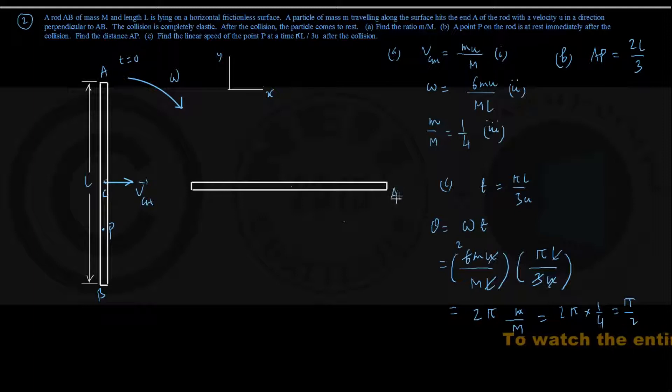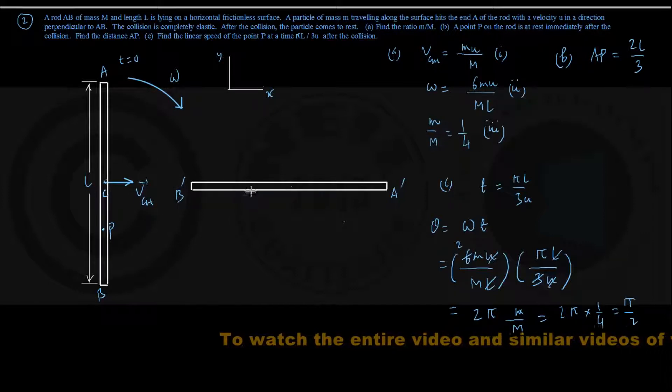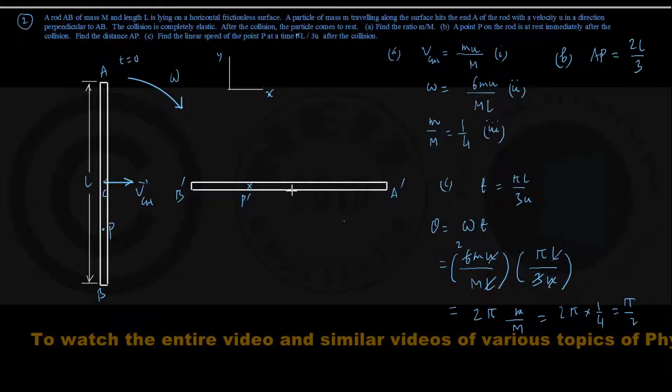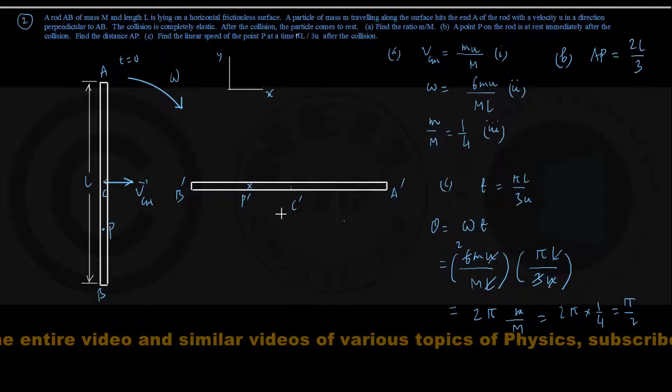This point A has come to A dash, this is where the point B has come to B dash, and the point P is somewhere here, that is P dash, and I am calling the center of mass new location to be C dash here.